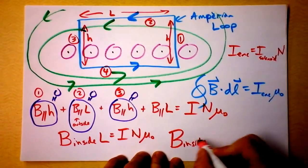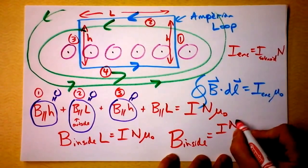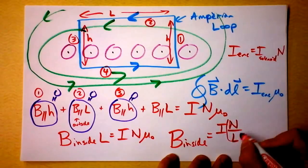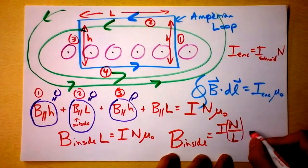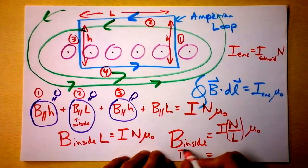B inside, we'll solve it for B inside, and we find that it is simply the current times the number of loops divided by the length times mu naught. That is the magnetic field inside of a solenoid.